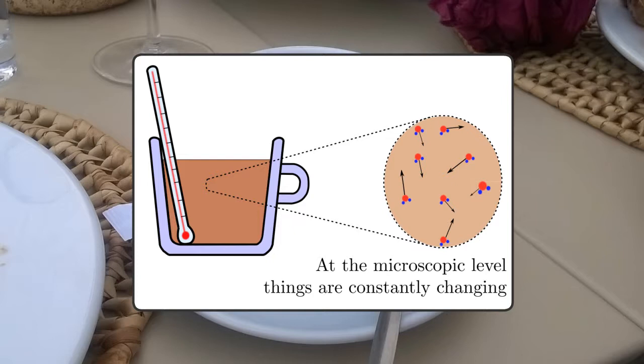Returning to our cup of tea, we could see it equilibrating by measuring its temperature with a thermometer. But if we could accurately measure each molecule individually, we would see that the state is constantly changing.